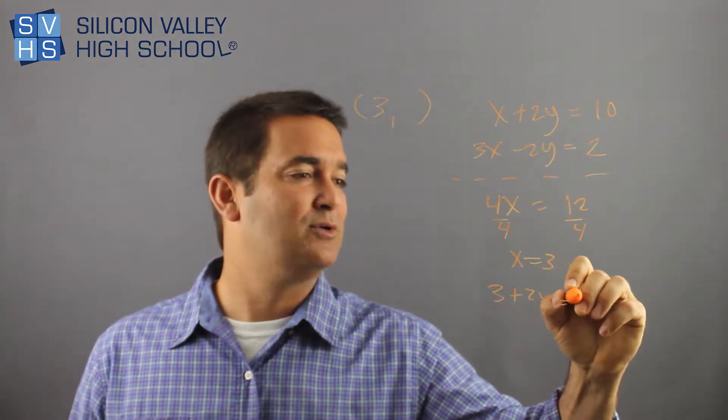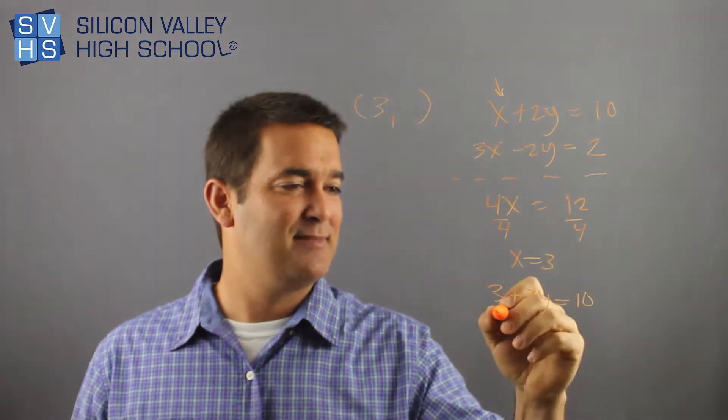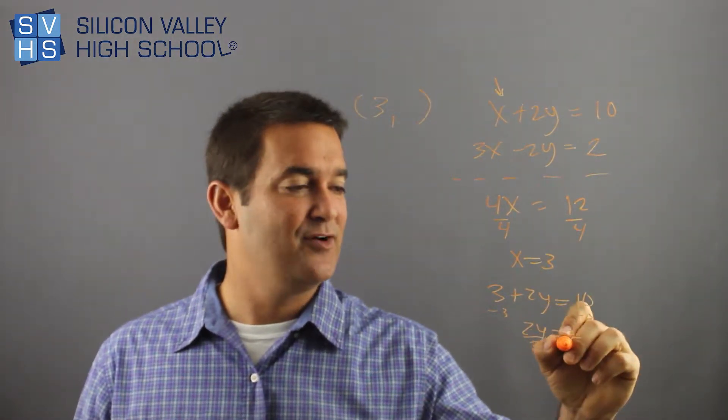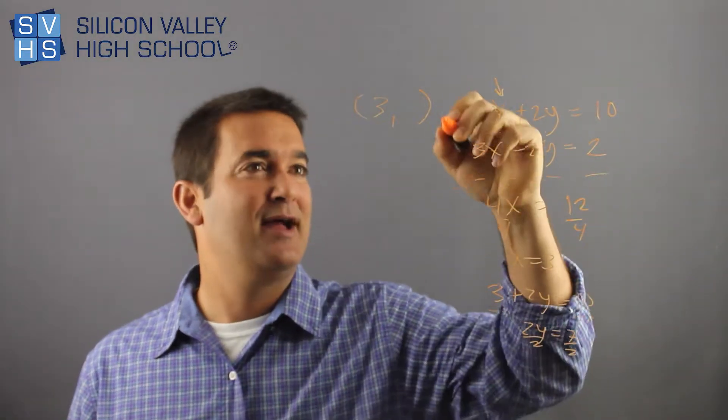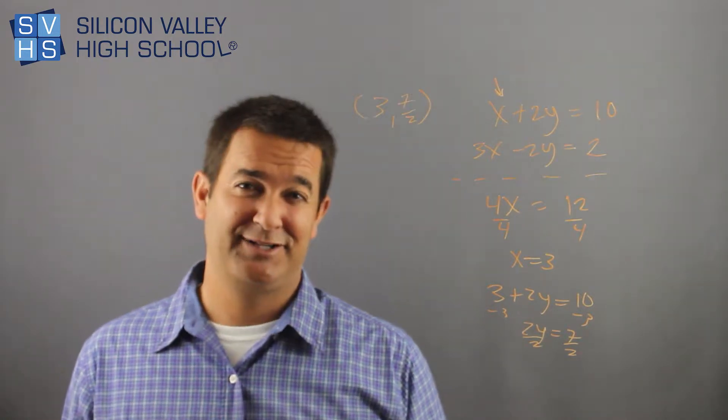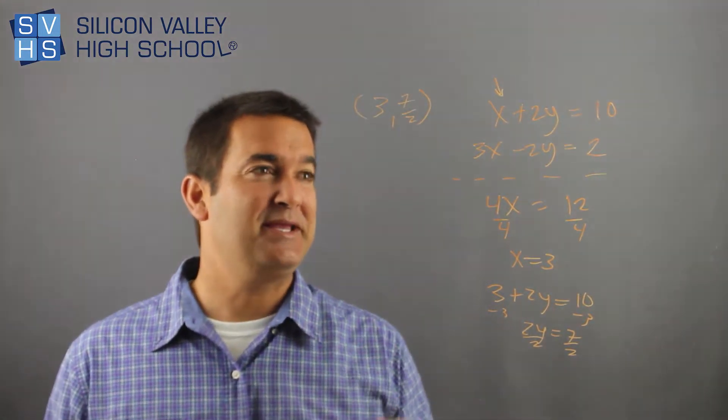3 plus 2y equals 10. All I did was plug it into that x. And then you're like, minus 3, minus 3, 2y equals 7. Divide both sides by 2. And your y is 7 halves or 3 and a half. Apologies for the fraction. That was some poor planning on my part. But that's it. So it's pretty easy.